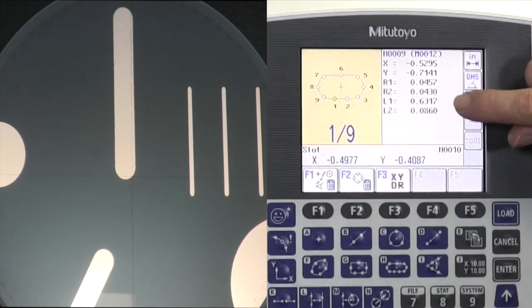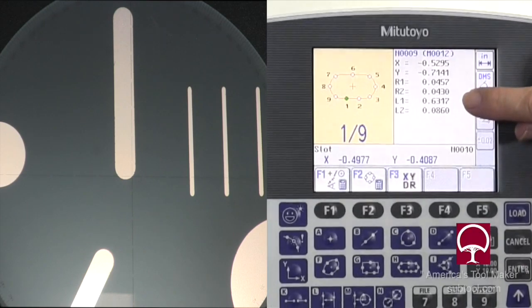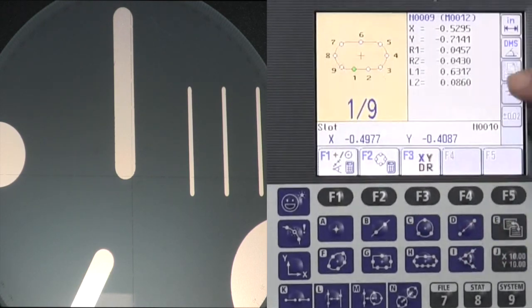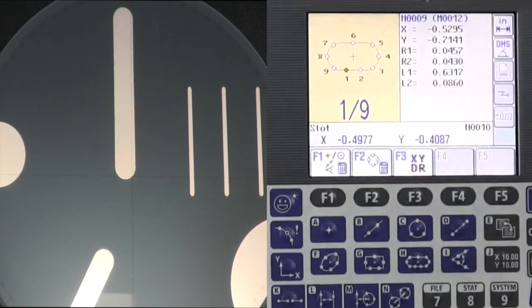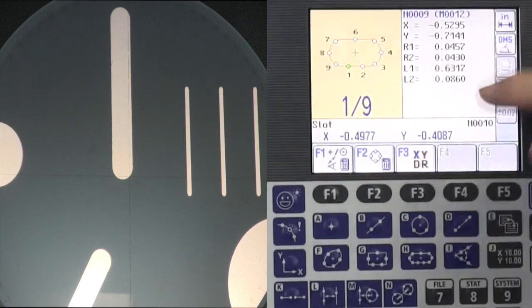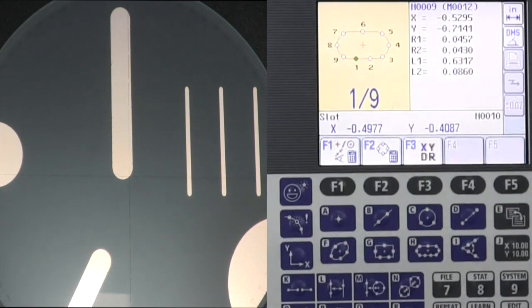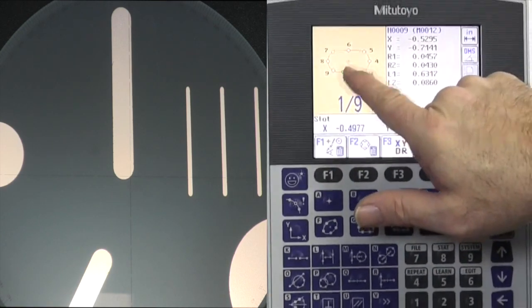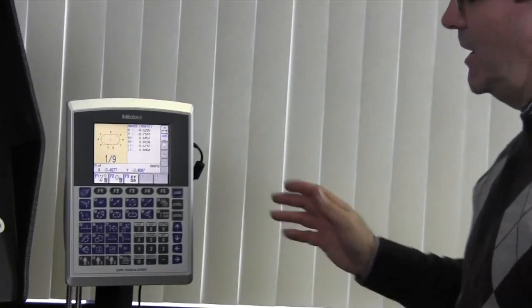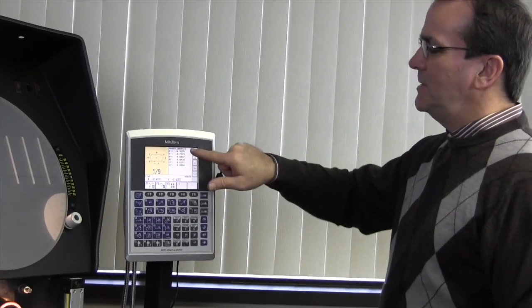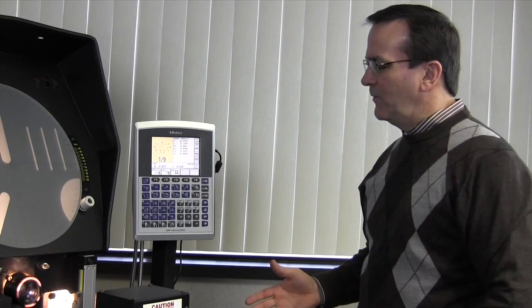Okay, so it gives us our length, 631 thousandths. It gives us our width, 86 thousandths. It gives us radius 1, which is at the top is 45 thousandths and 7 tenths. And the one at the bottom is 43 thousandths. And it gives us the x and y theoretical center of our slot. So again, we picked nine points. One button gives us a lot of information.